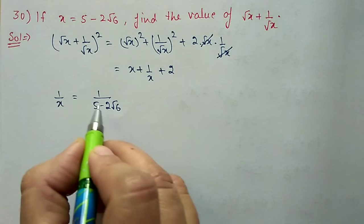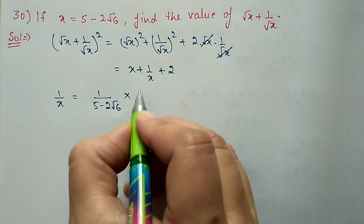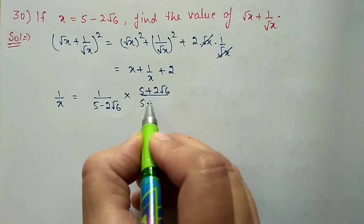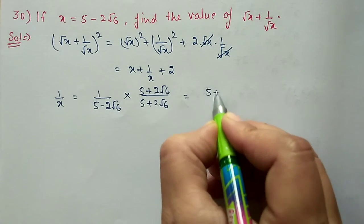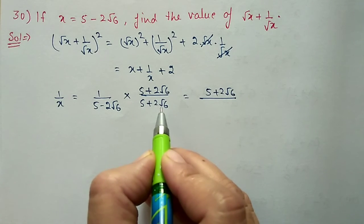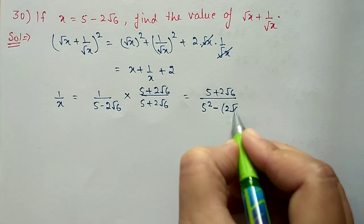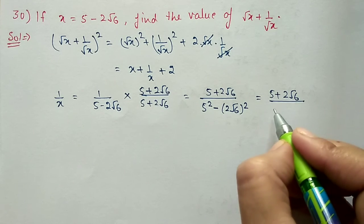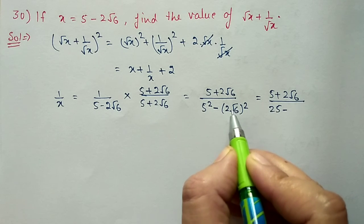So 1/x = 1/(5 − 2√6). Since there is a root in the denominator, we rationalize by multiplying up and down by (5 + 2√6). The numerator becomes 5 + 2√6, and the denominator uses the (a − b)(a + b) = a² − b² formula: 5² − (2√6)² = 25 − 4×6 = 25 − 24 = 1.